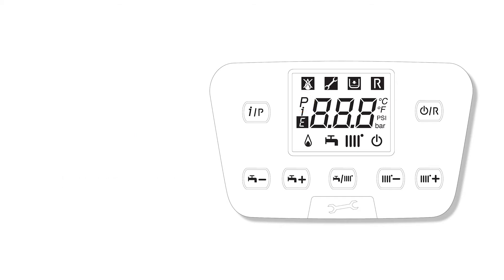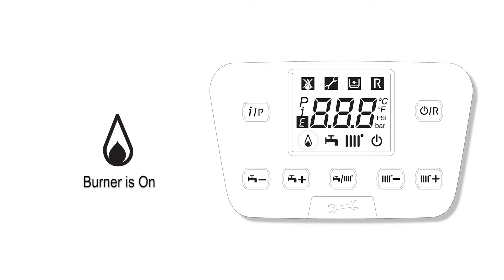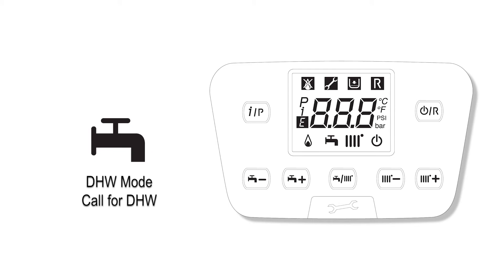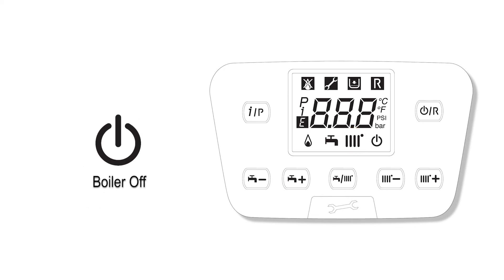The right side of the screen will display Fahrenheit and PSI, the default units out of the box, or Celsius in bars. If the flame icon is on, the burner is lit. If the faucet icon is flashing, there is a call for domestic hot water. And if the radiator icon is flashing, there is a call for central heat. The last icon is the power indicator — if the boiler is off, only this icon will be displayed in the lower right corner of the screen.